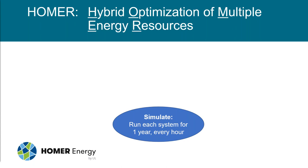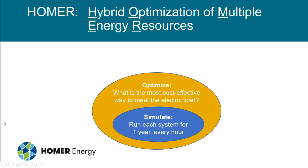The HOMER approach includes three different processes nested together. At its core, HOMER is a simulation engine. It simulates the operation of an electric power system for one year, hour by hour or minute by minute. At each time step, HOMER looks for the most cost-effective way to meet the electric load based on the constraints the user defines.